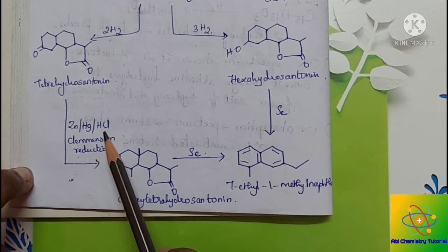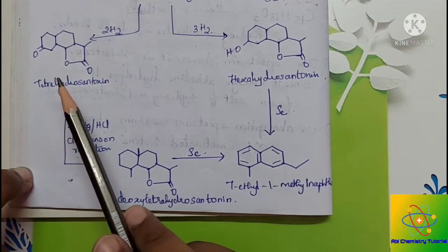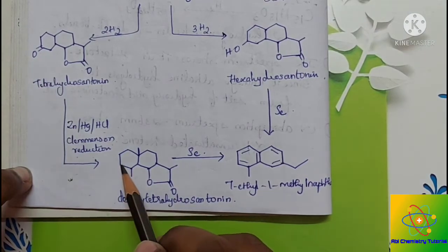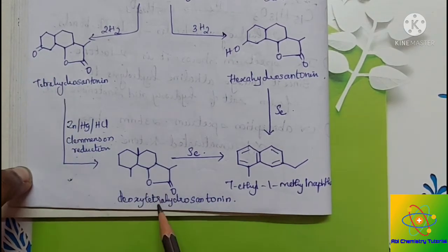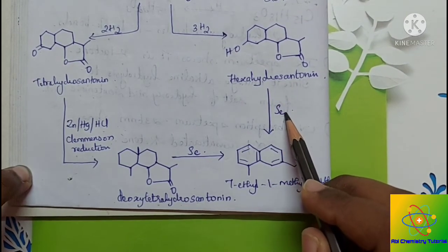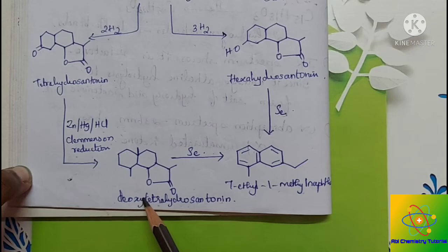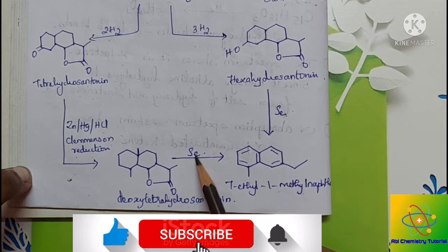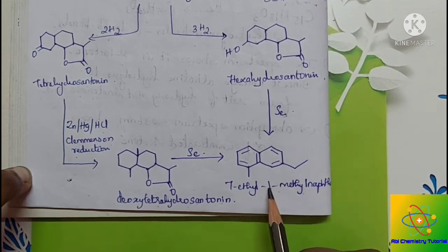Tetrahydroxanthone is then subjected to Clemmensen reduction using zinc amalgam and hydrochloric acid. The function of Clemmensen reduction is to convert a keto or aldehyde group to an alkane group. Here the C=O double bond is reduced to an alkane group, giving deoxytetrahydroxanthone — the oxygen is removed from the structure. Hexahydroxanthone on distillation with selenium gives 7-ethyl-1-methyl-naphthol, and deoxytetrahydroxanthone on distillation with selenium also gives the same compound, proving the skeleton of alpha-santone.